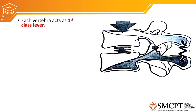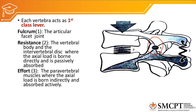The lever system in the thoracic spine is the same as the cervical spine — it is a first-class lever where the fulcrum is the articular facet joint. The resistance is the vertebral body and the intervertebral disc, where the axial load — body weight — acts downward. This load is overcome by the effort created by the posterior muscles of the vertebral spine, mainly the erector spinae and multifidus.